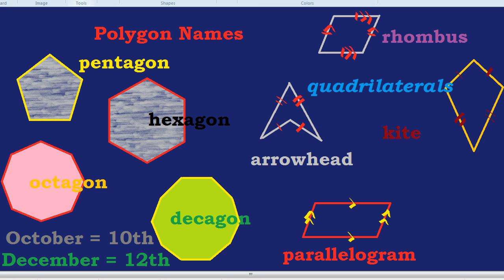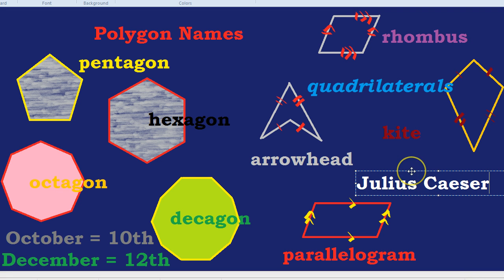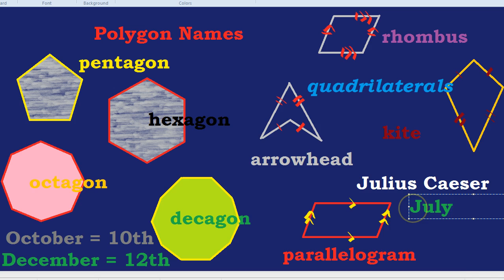The man responsible for this strange occurrence is none other than Julius Caesar. And what he did, to confuse people for subsequent generations, is he added two months. Can you guess which two months he added? He added July, after himself. And he added August, with Augustus Caesar.